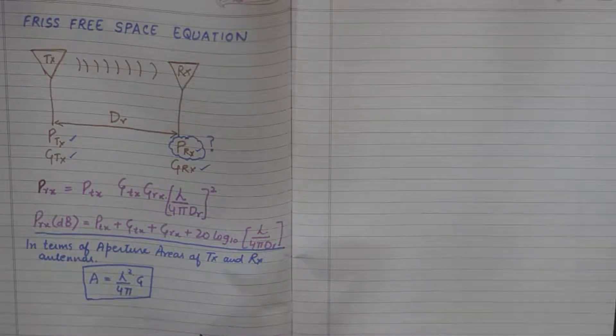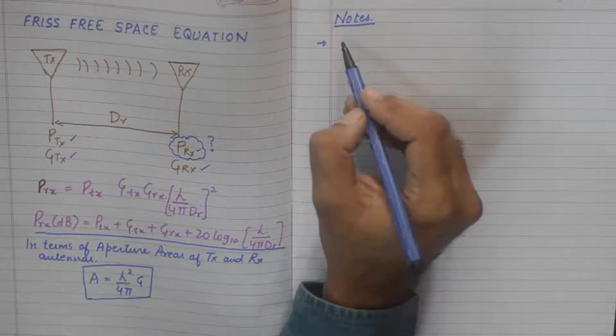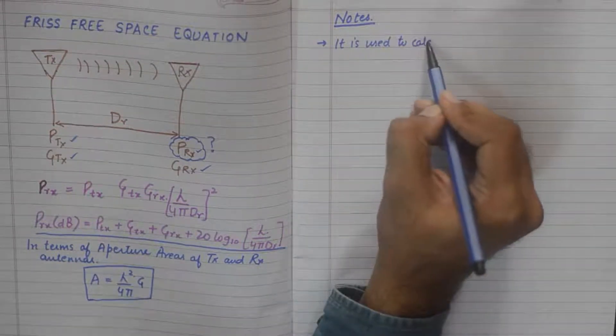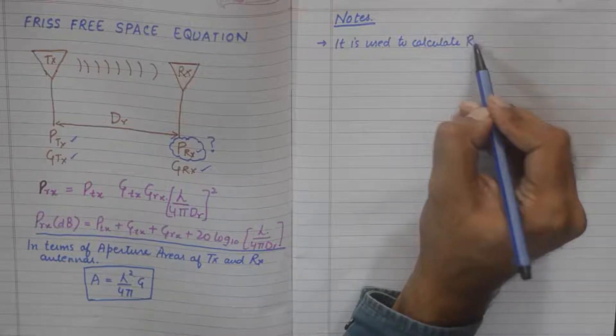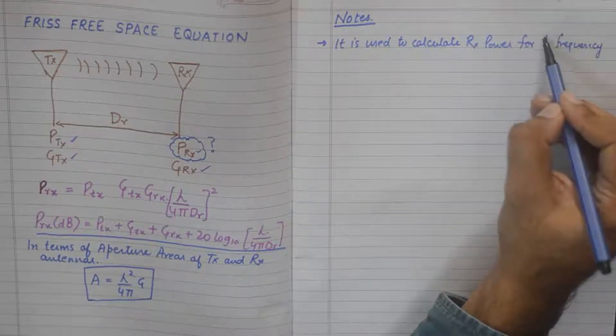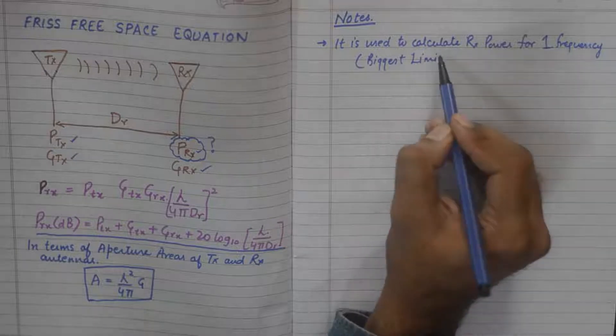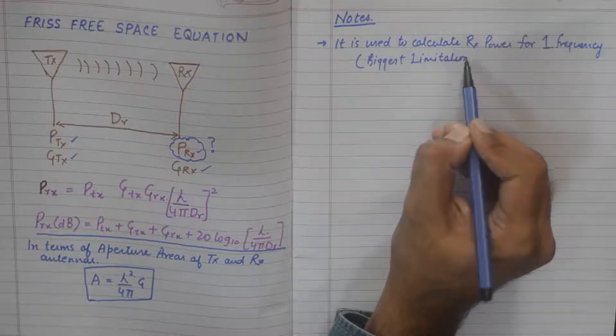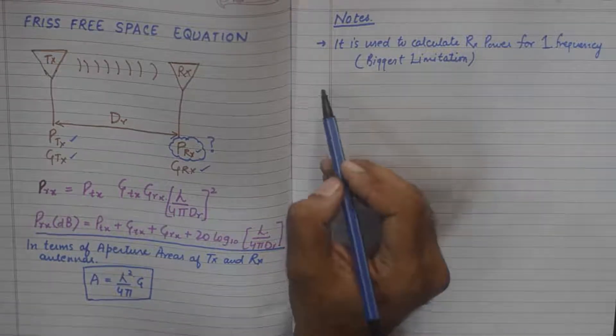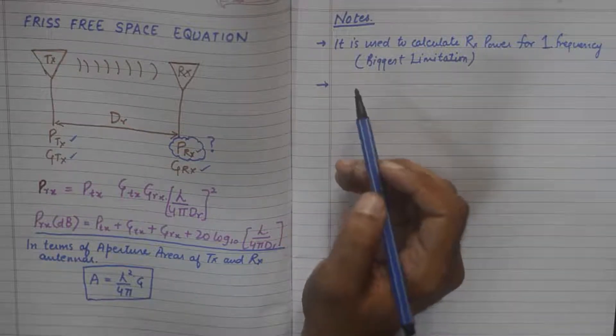Now there are some important notes about Friss Free Space Equations. The first note is that it is used to calculate received power for one frequency, and this is the biggest limitation of this equation. Because in modern day communication systems, we hardly have any signal that has just one frequency component in transmission. So for a transmission that has different frequency components, this equation is not going to be so useful.